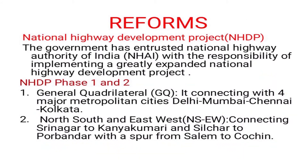Next, we move on to the reforms. The National Highway Development Project (NHDP): the government has entrusted the National Highway Authority of India (NHAI) with the responsibility of implementing a greatly expanded national highway development project. There are two phases. The first is the Golden Quadrilateral, connecting four major metropolitan cities: Delhi, Mumbai, Chennai, and Kolkata. The second is the North-South and East-West corridor, connecting Srinagar to Kanyakumari and Silchar to Porbandar, with a spur from Cochin.